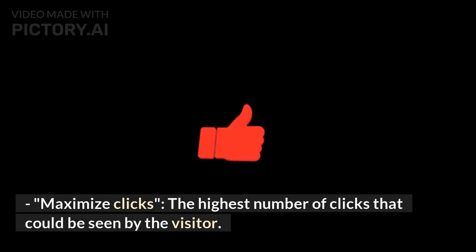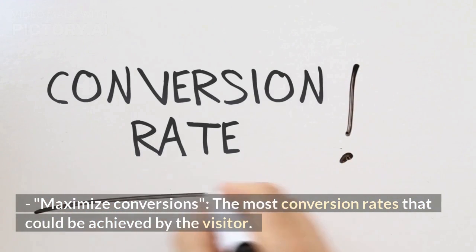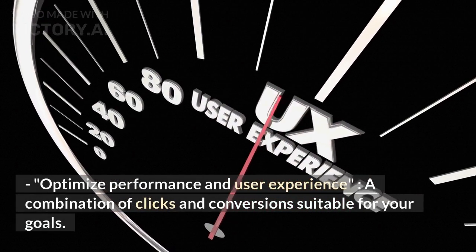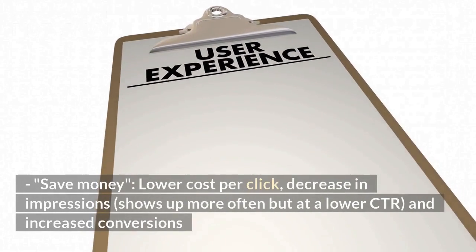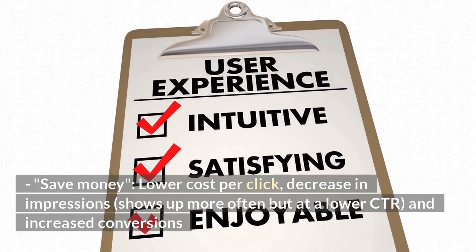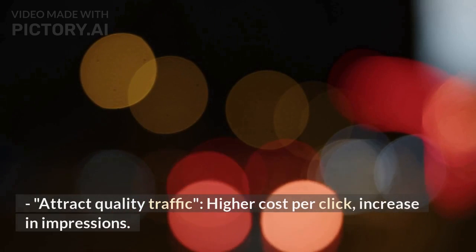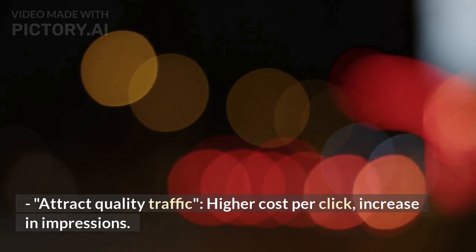Maximize clicks: the highest number of clicks that could be seen by the visitor. Maximize conversions: the most conversion rates that could be achieved by the visitor. Optimize performance and user experience: a combination of clicks and conversions suitable for your goals. Save money: lower cost per click, decrease in impressions, shows up more often but at a lower CTR, and increased conversions. Attract quality traffic: higher cost per click, increase in impressions.